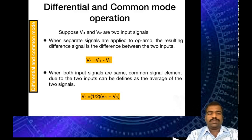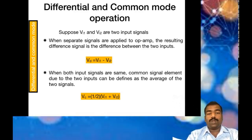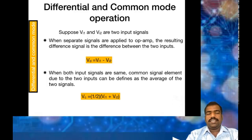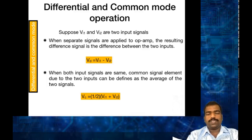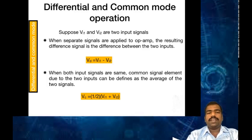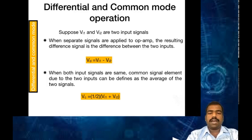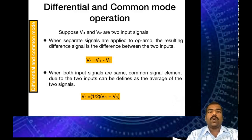Suppose when both signals are the same and they are in phase, there must exist some common signal element due to these two inputs. This common signal element can be defined as the average of these two signals. The average in the sense is Vi1 plus Vi2 divided by 2.